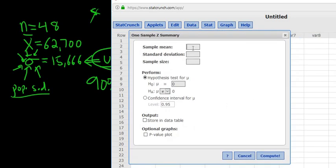We have a summary of the data, so we click with summary. You only use with data if you actually have the data. Typically, when it's with data, it's always t. The sample mean is 62,700. The standard deviation is 15,666, and the sample size is 48. It looks good.